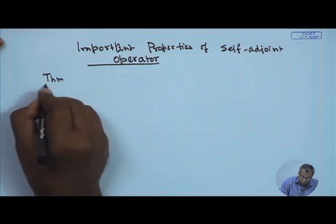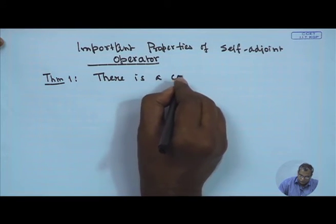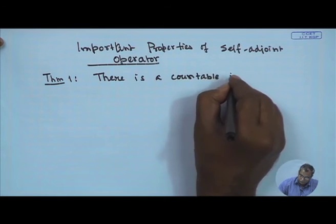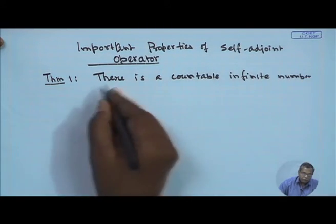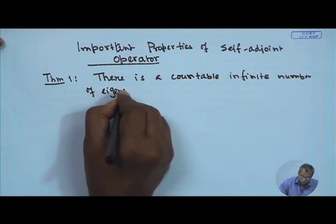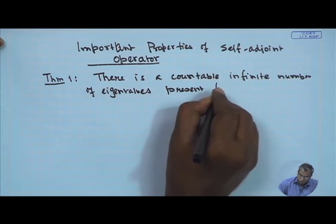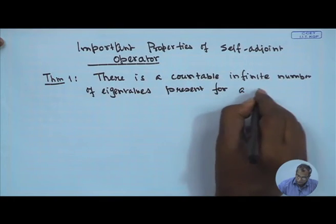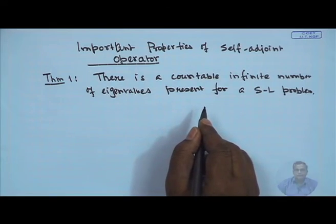The first property — Theorem 1 — is that there are a countably infinite number of eigenvalues for a Sturm-Liouville problem. So the number of eigenvalues in the system is infinite, meaning we deal with an infinite-dimensional space.